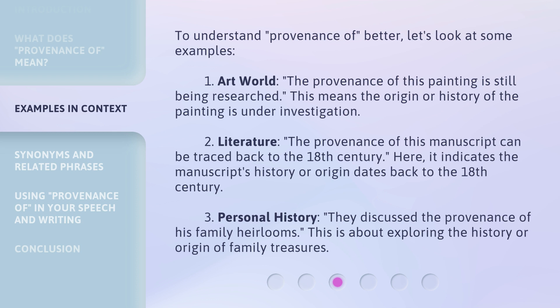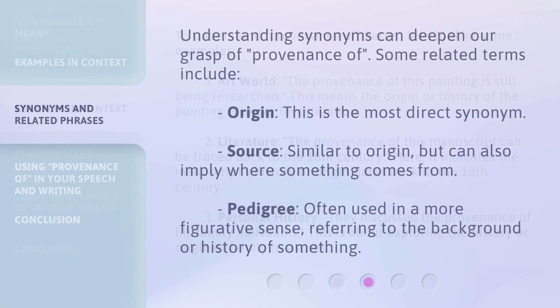Understanding synonyms can deepen our grasp of 'provenance of.' Related terms include: origin — the most direct synonym; source — similar to origin but can also imply where something comes from; and pedigree — often used in a more figurative sense, referring to the background or history of something.